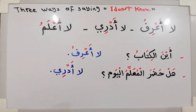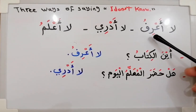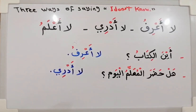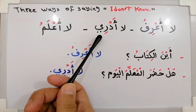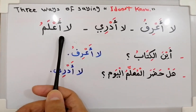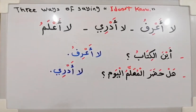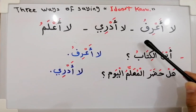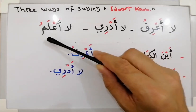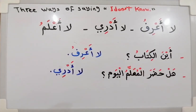السلام عليكم ورحمة الله وبركاته. Today's video is about 3 ways of saying 'I don't know' in Arabic. You can say لا أعرف, لا أدري, or لا أعلم — all of which mean 'I don't know.'